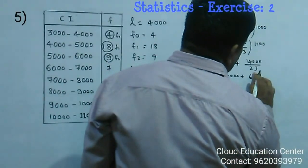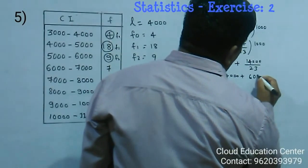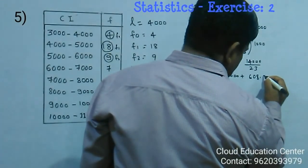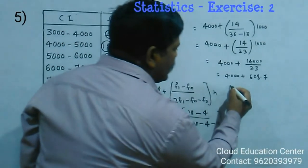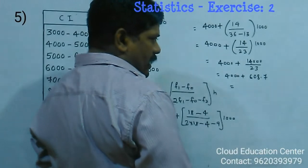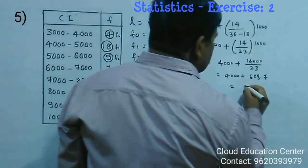It is 608.7. Now you add this 4000 plus 608.7.